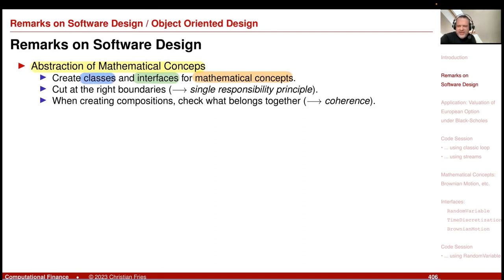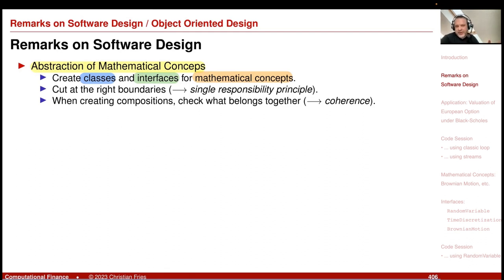The question is: where do I cut my problem — for example, evaluation of a European option under the Black-Scholes model using the Monte Carlo method — into smaller parts? Where should be the boundaries for which we define the interfaces? I should cut at the right boundaries.